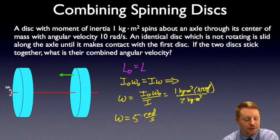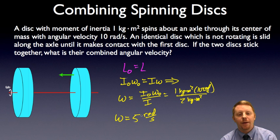And that should make some intuitive sense. If one of them is spinning at ten radians per second, the other identical disk is at zero, they combine with each other, you're going to get half the angular velocity.